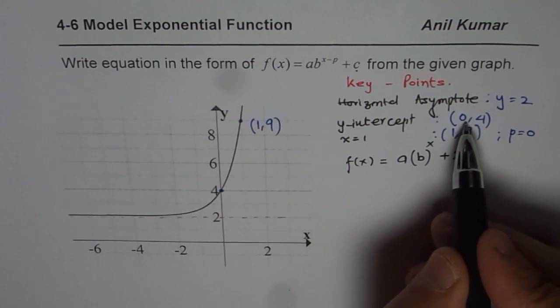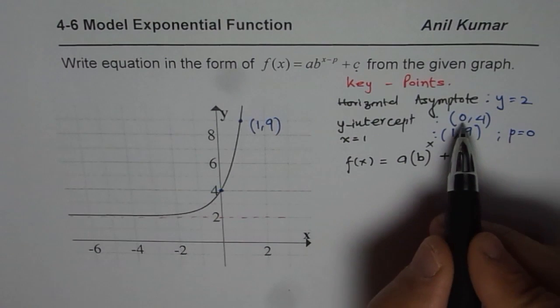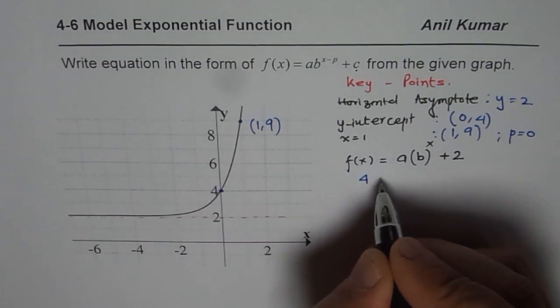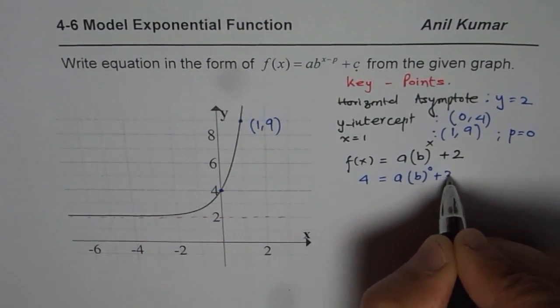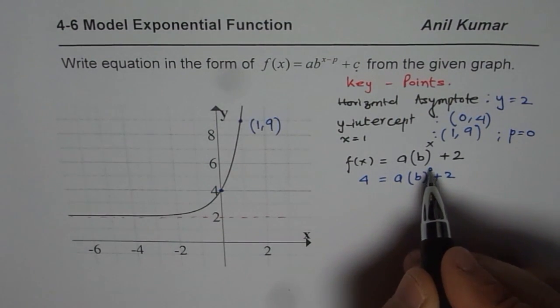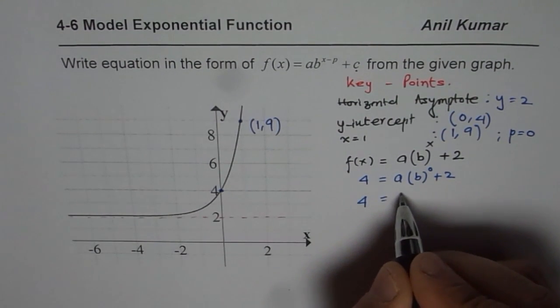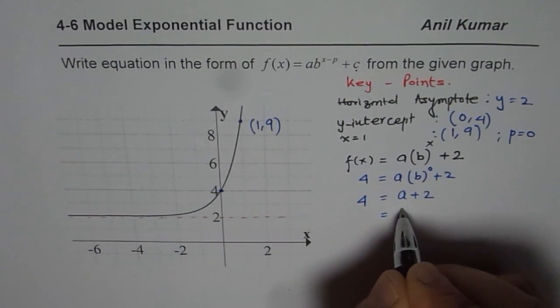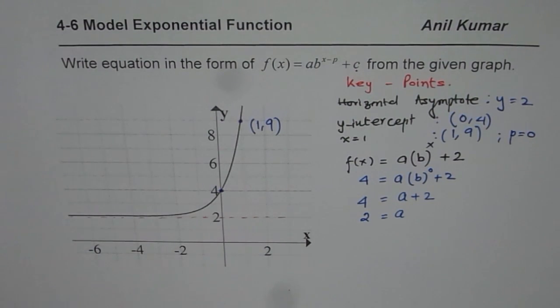Let us substitute first (0, 4), which is the y-intercept. That means that x = 0, f(x) = 4. So we get 4 = a times b^0 + 2. Anything to the power of 0 is always 1. So we have 4 = a(1), so we can write this as a + 2, and from here we get a = 2. So the base of this function is 2.